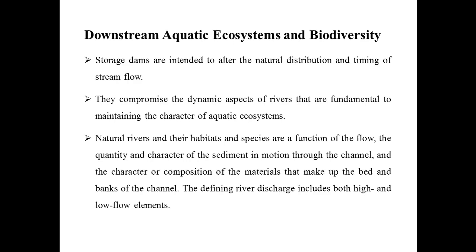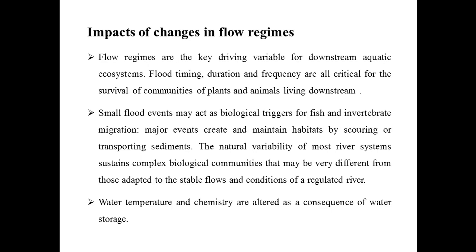The defining river discharge includes both high and low flow elements. Next is the impacts of changes in flow regime. The flow is greatly influenced by the construction of dams. Flow regimes are the key driving variables for downstream aquatic ecosystems. Flood timing, duration, and frequency are all critical for the survival of communities of plants and animals living downstream. Small flood events may act as biological triggers for fish and invertebrate migration. Major events create and maintain habitats by storing or transporting sediments. The natural variability of most river systems sustains complex biological communities that may differ from those adapted to the stable flows of unregulated rivers.